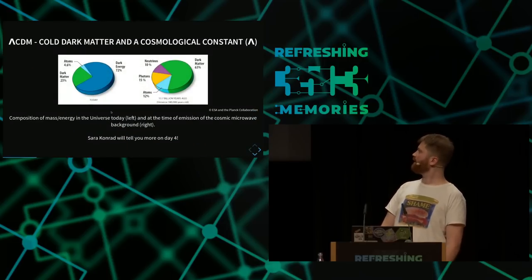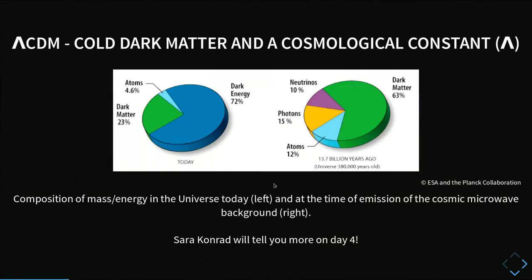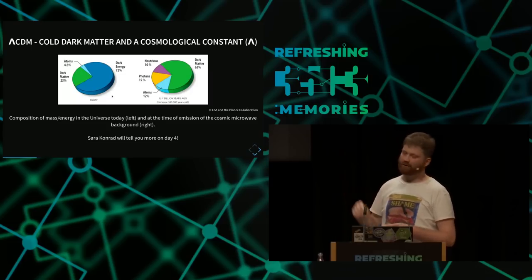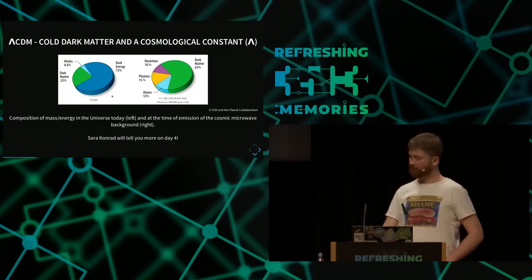From this fit we get the makeup of the universe — once at the time of the CMB where it was emitted, and then today. At the time of the CMB there were atoms and dark matter, which don't really change in absolute amount. There were also neutrinos and photons which decrease in energy content due to expansion and redshifting, while atoms and dark matter stay the same. But then there's something weird called dark energy, which drives the accelerated expansion of the universe, as we've known since the late 90s.